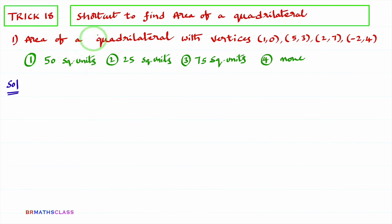we will learn shortcut formula to find area of quadrilateral when vertices are given. You observe this question what they are asking. Area of a quadrilateral with these vertices. To calculate area of quadrilateral with vertices, we use this formula. Remembering this formula is not difficult, it is very easy.